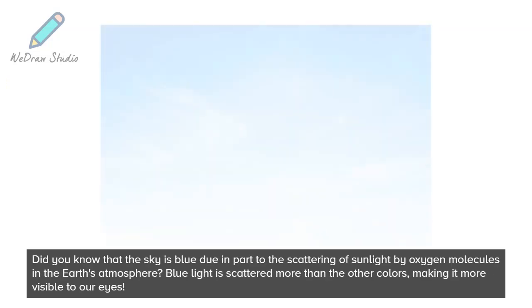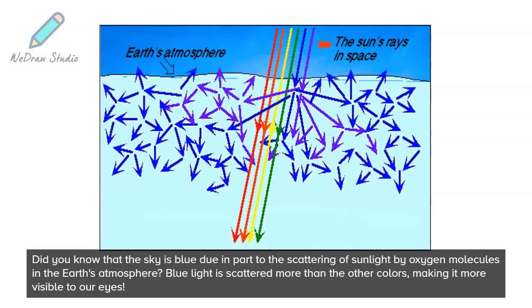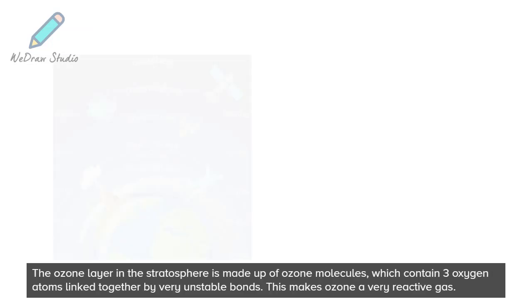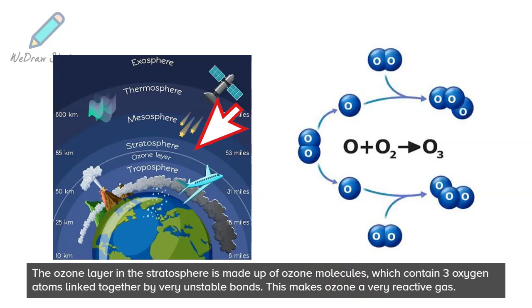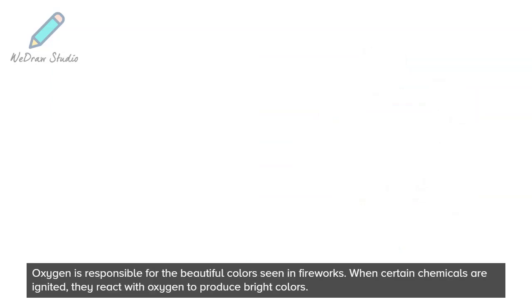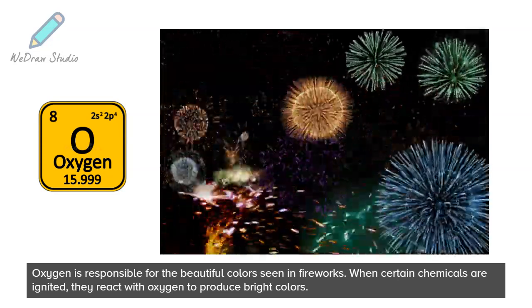Did you know that the sky is blue due in part to the scattering of sunlight by oxygen molecules in the Earth's atmosphere? Blue light is scattered more than the other colors, making it more visible to our eyes. The ozone layer in the stratosphere is made up of ozone molecules, which contain three oxygen atoms linked together by very unstable bonds, making ozone a very reactive gas.